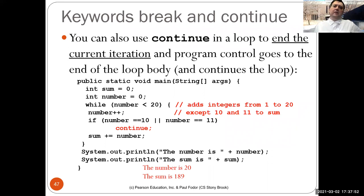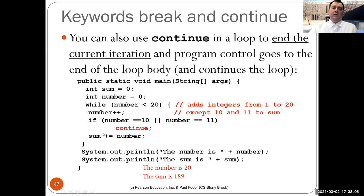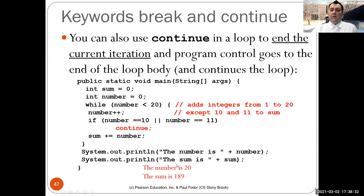The continue statement is similar to break but instead of exiting the loop, it skips the rest of the current iteration and goes back to check the loop condition. For example: summing numbers from 1 to 20 but skipping 10 and 11 — when the number is 10 or 11, continue skips the rest of the loop body and goes back to check the while condition. The loop still reaches 20, but 10 and 11 were not added to the sum. Continue is useful when you want to skip certain iterations.